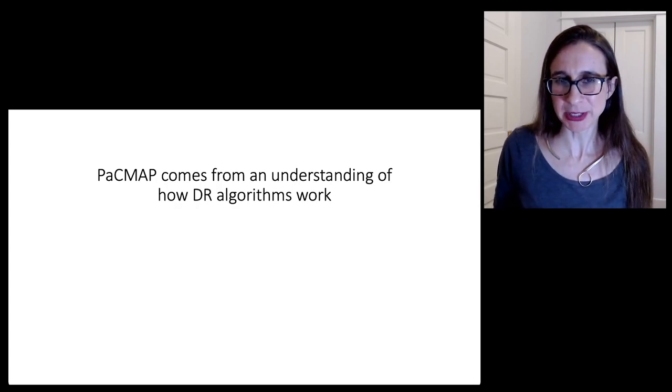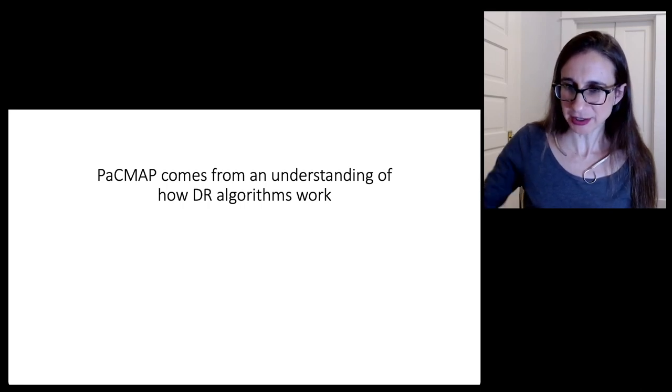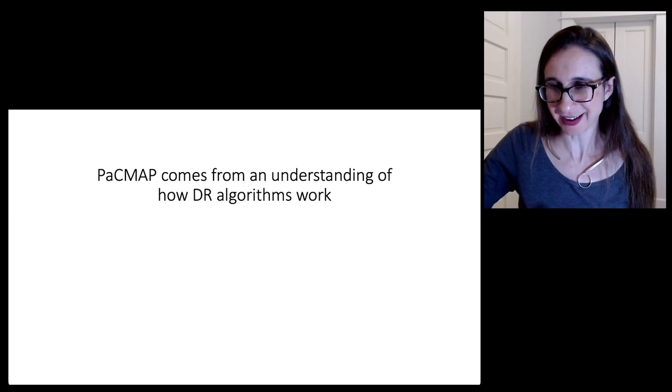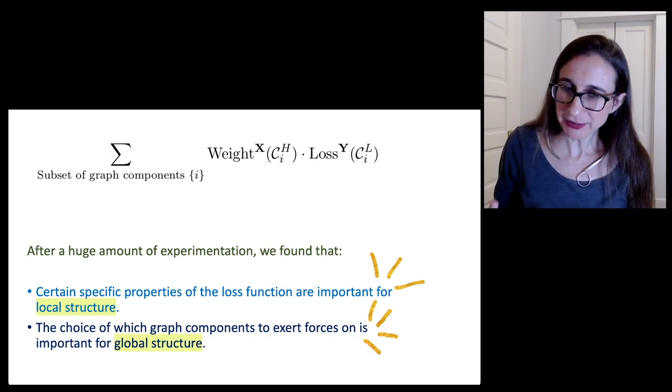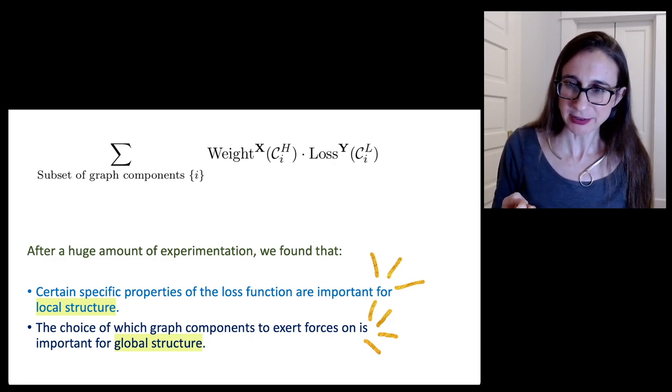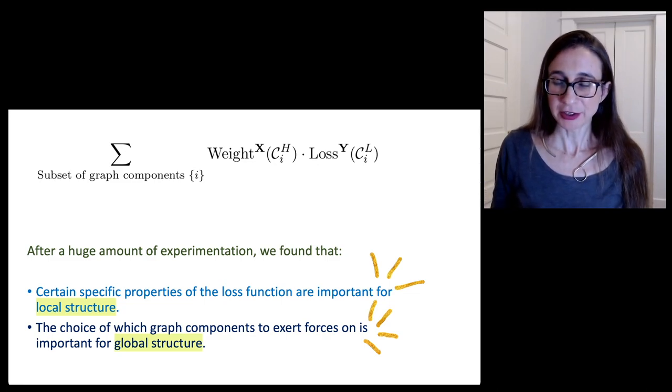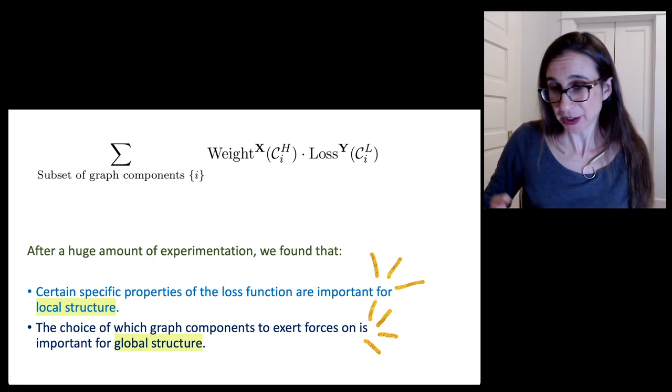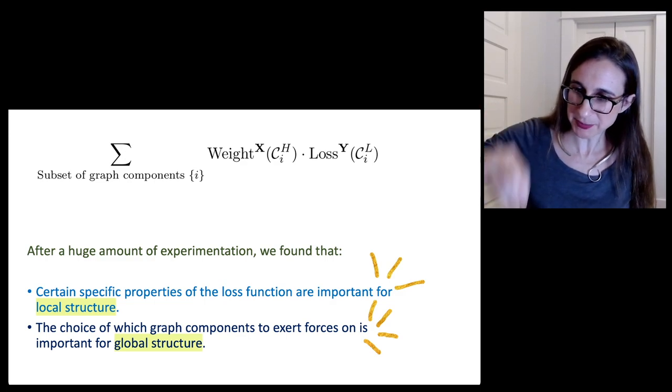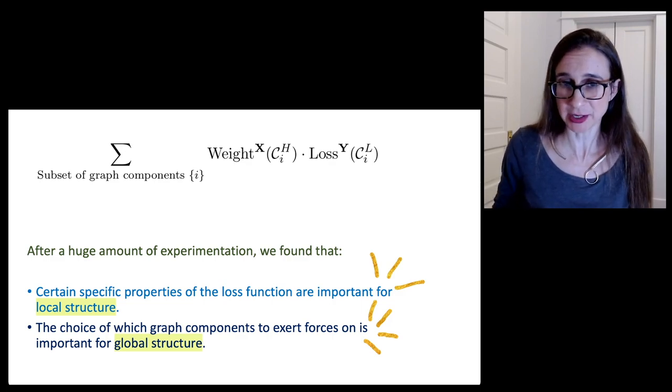Now the derivation of PacMap comes from an understanding of how dimension reduction algorithms work. I'll just tell you very briefly a little bit of that. I guess I'll refer to the paper for more details on that one. All of the algorithms that I've mentioned so far have a shared form. They are a sum over graph components and they have a weight on each graph component and a loss on each graph component. A graph component could be a pair of points or it could be a triplet of points. It could be really whatever subset of the data that the algorithm designers want to have.